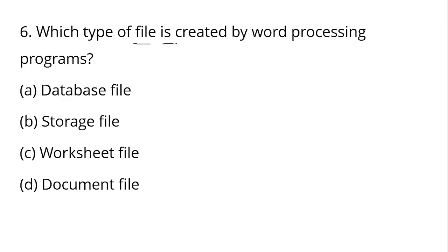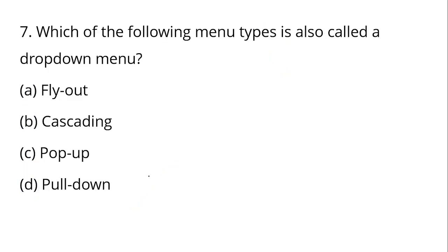Question number 6: Which type of file is created by word processing programs? Word processing program - Microsoft Word is the best example. Options are database, storage file, worksheet is Excel, document files - word processing program creates document files. Microsoft Word is the best example to create document files.